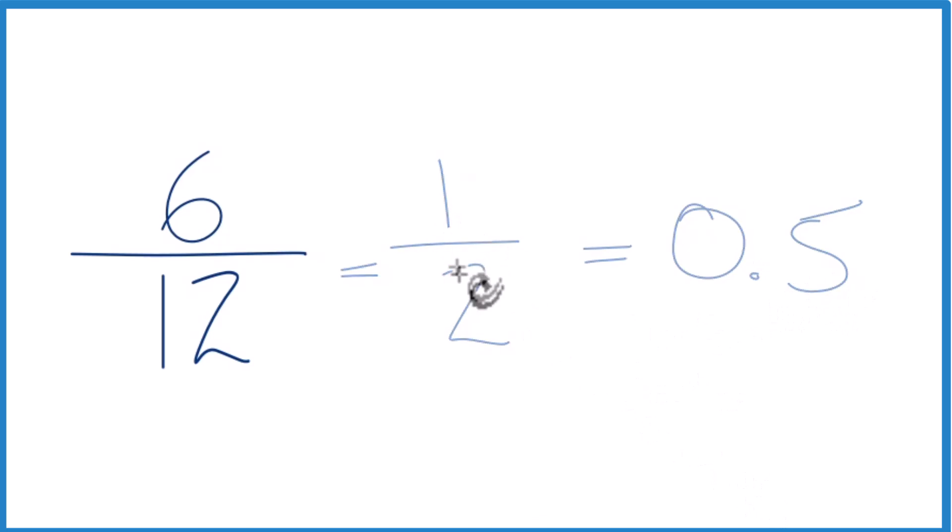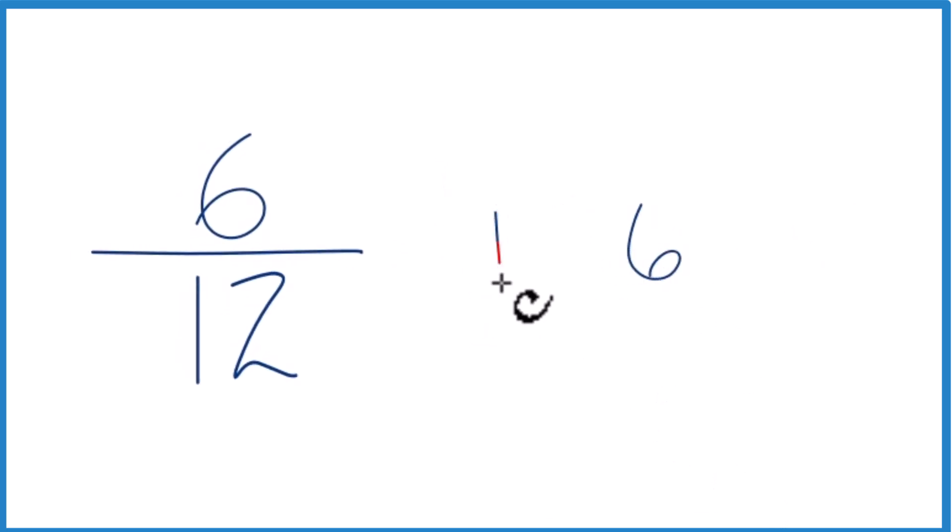Here's another method. We could take 6 and see how many times 12 divides into 6. 12 doesn't go into 6. Let's call this 60. As long as we put a zero and a decimal point up here, that's fine.